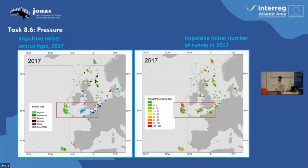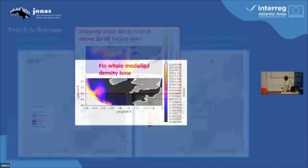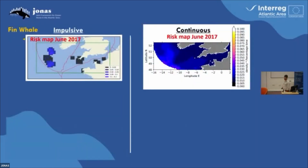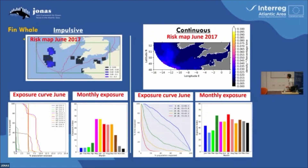So quite a range of activity in terms of impulsive. And on the shipping noise side, as you'd expect, there's a lot of activity in the English Channel. For fin whales, we create risk maps for both types. And what we can do is look at the monthly exposure indices and think about what this might mean for management. On the left we have the impulsive, on the right we have the continuous. There's a very seasonal variation for the impulsive, because these are discrete events — the work tends to be done in the summer — whereas it's more consistent for the continuous noise activity.